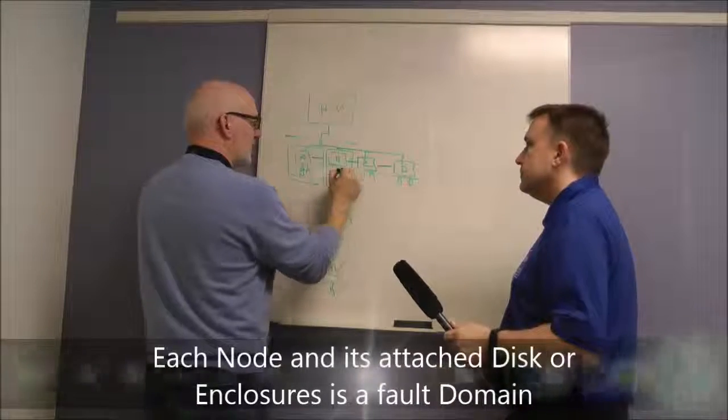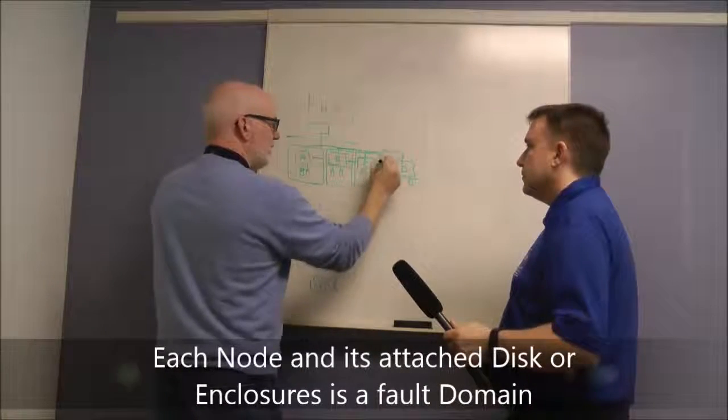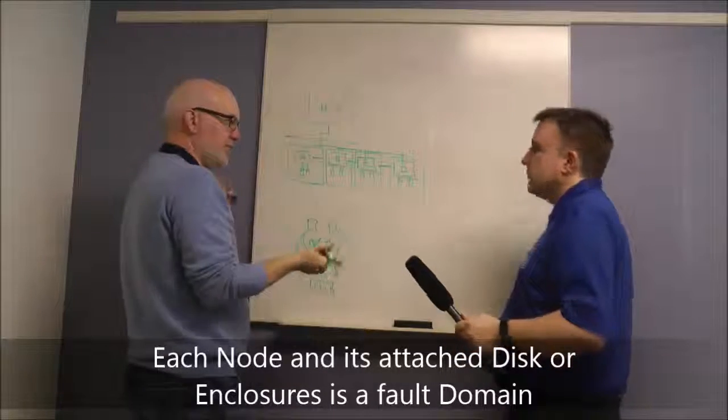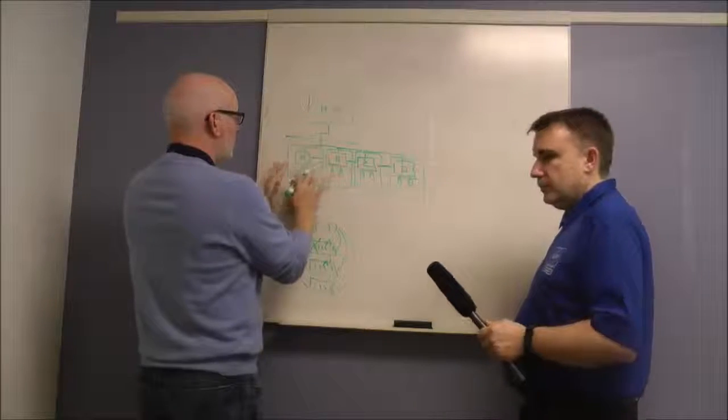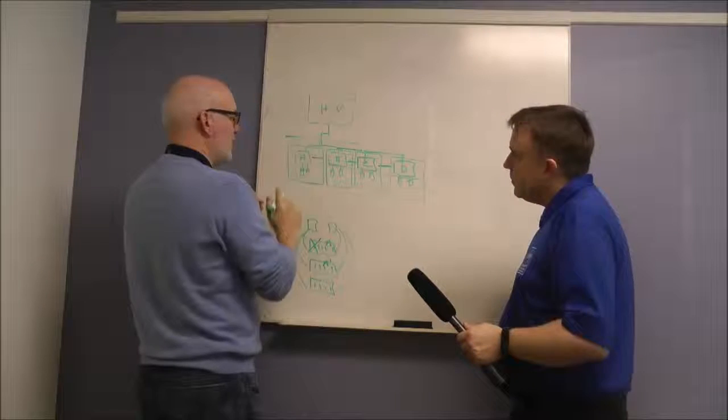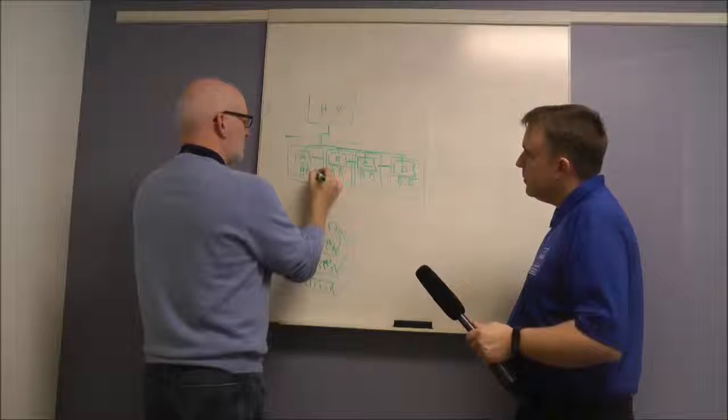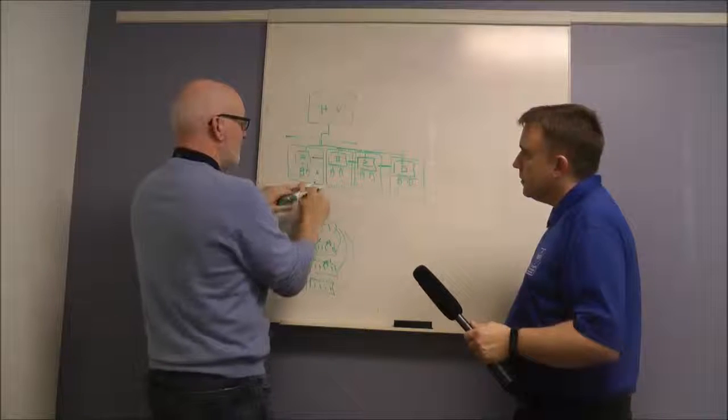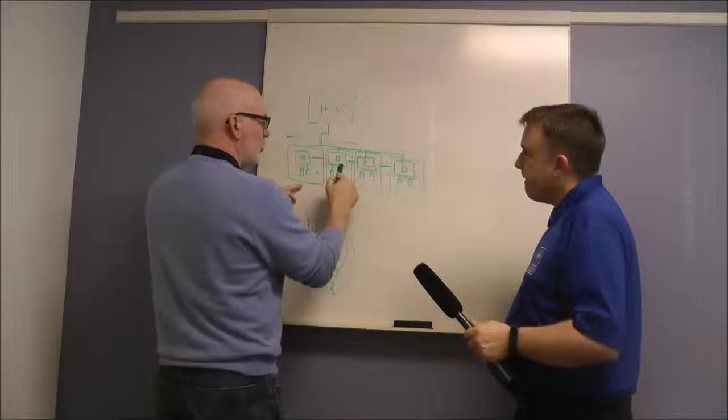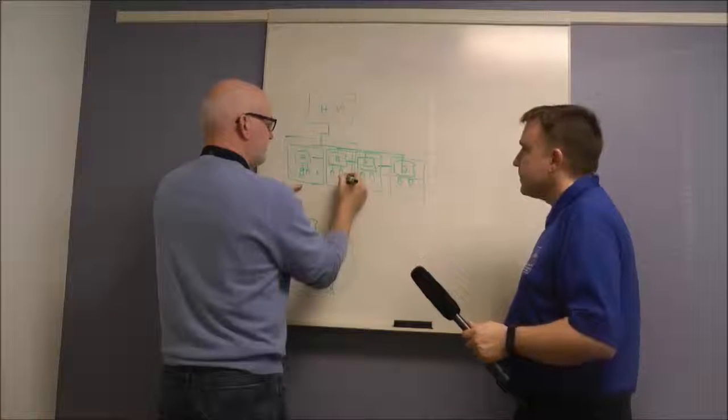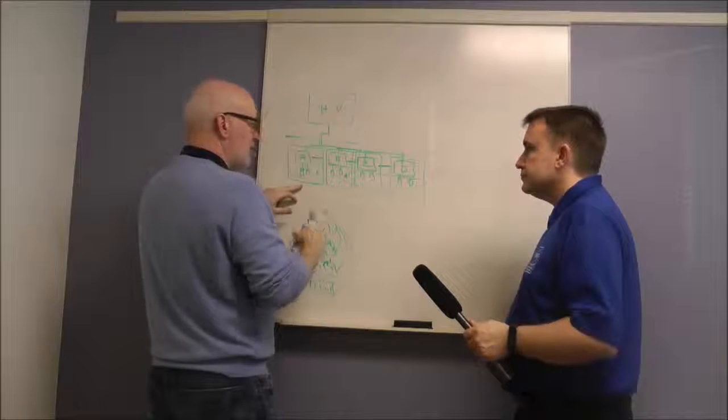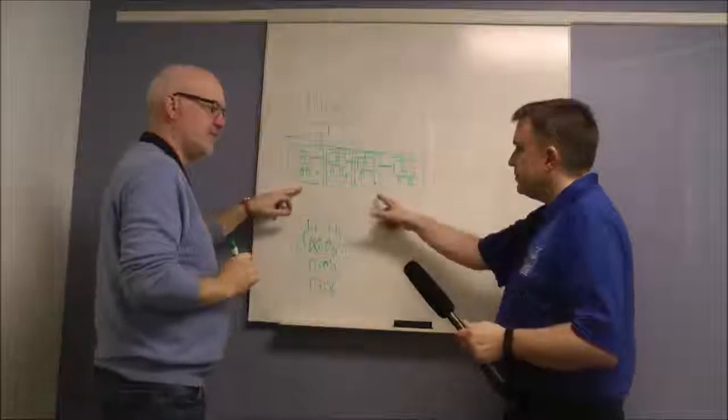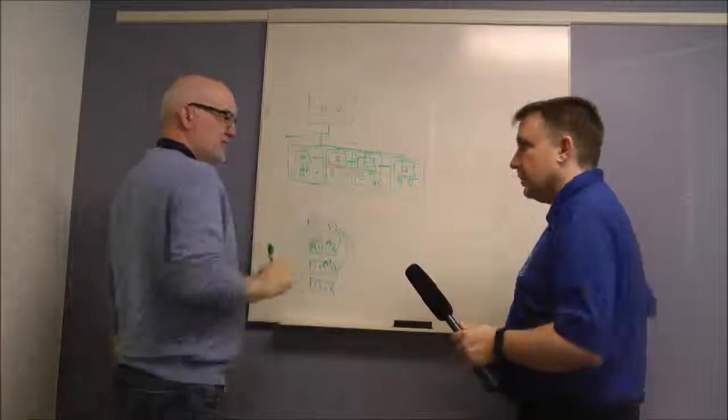If you extend that thinking to this and say each node and all its attached disks or enclosures is a fault domain, then the same logic applies. Hyper-V writes some data, that means somewhere on one of these disks attached to node A I will write my first block A. The A prime will then go on one of these nodes, and if I do three copies, A prime prime will go over here. It could also be there.